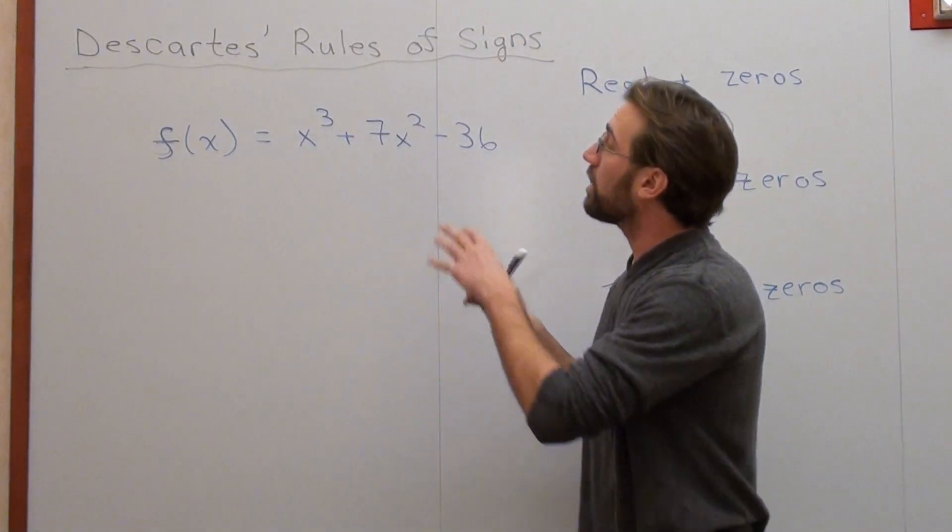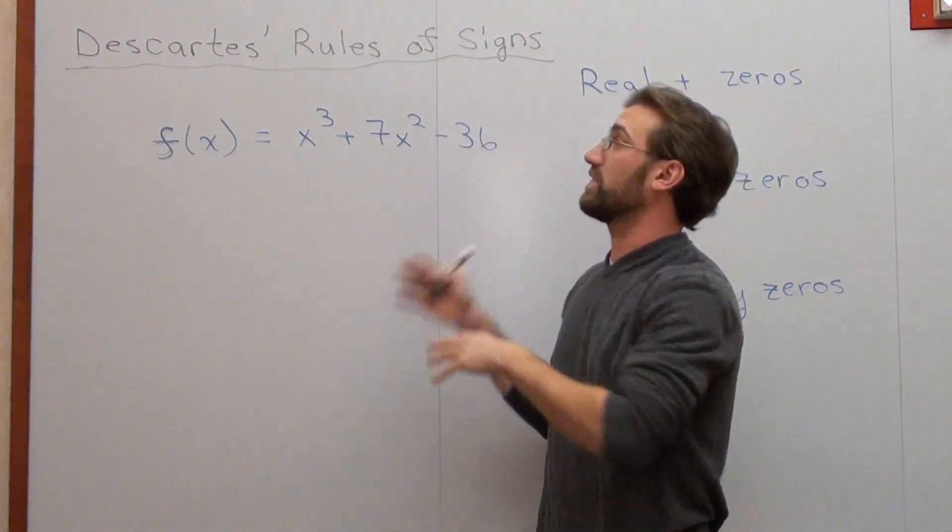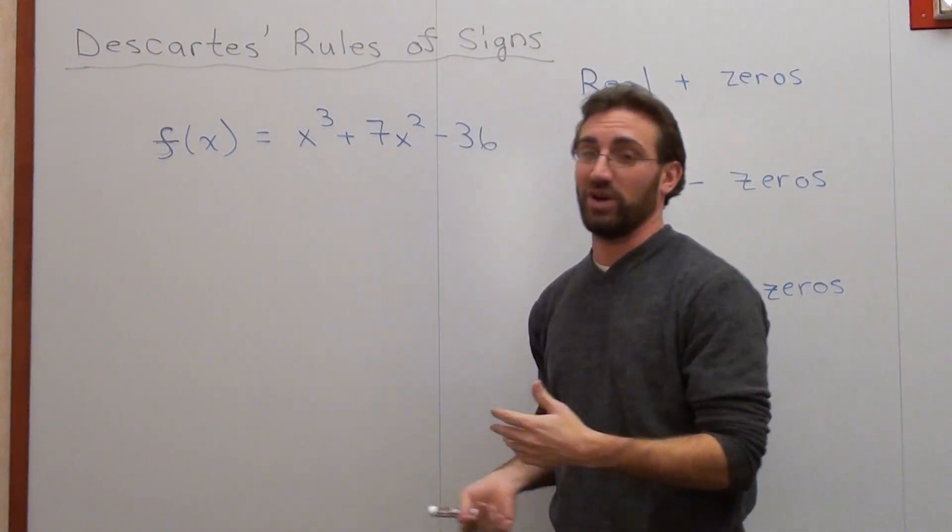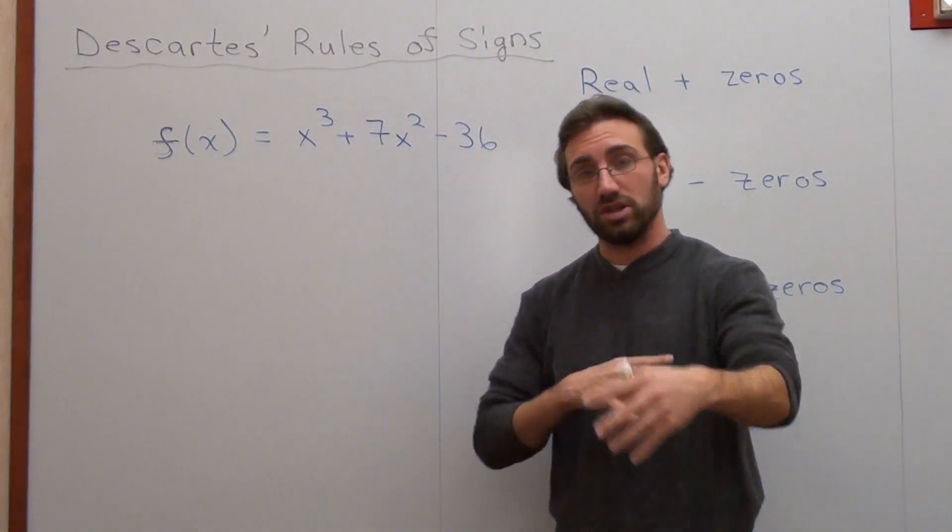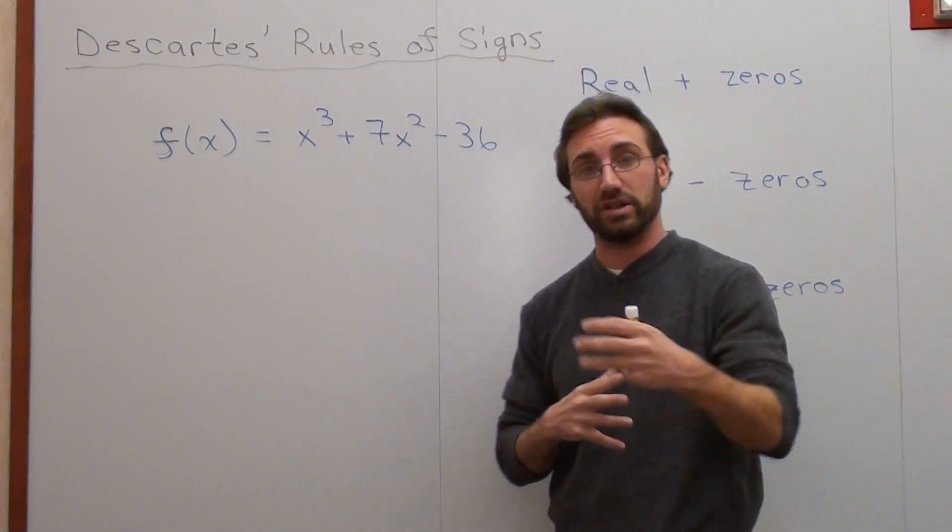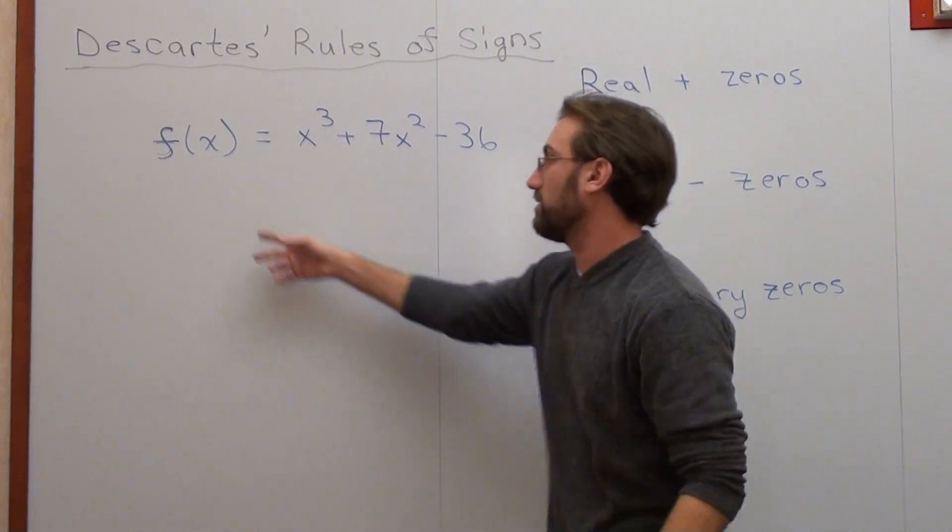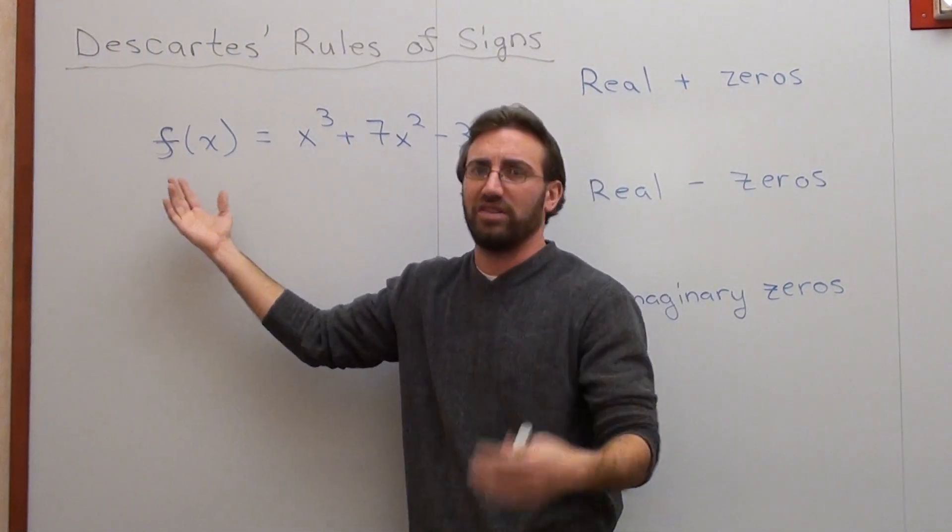Hello again, I'm back. We're going to be doing Descartes' Rule of Signs. I don't actually know if I pronounced his name right. That's not really my specialty in math. Basically, you can use this when you're trying to figure out zeros in a polynomial. I usually put p(x), but this time I'm going to put f(x).